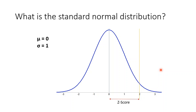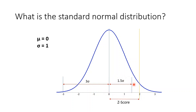For example, a z-score of negative 3 tells us that we are 3 standard deviations to the left of the mean. And a z-score of 1.5 tells us that we are 1.5 standard deviations to the right of the mean.